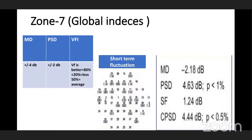CPSD — corrected pattern standard deviation — is PSD corrected for short-term fluctuation. If short-term fluctuation is due to pathology, PSD will be better. If it is due to unreliability, PSD will be worse.